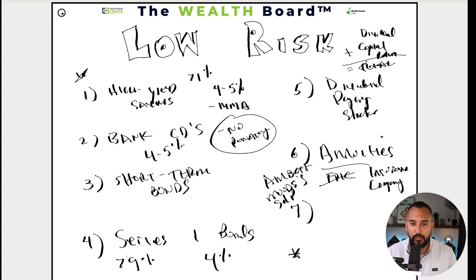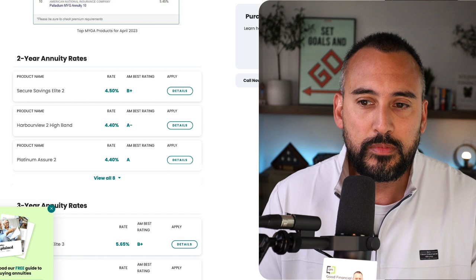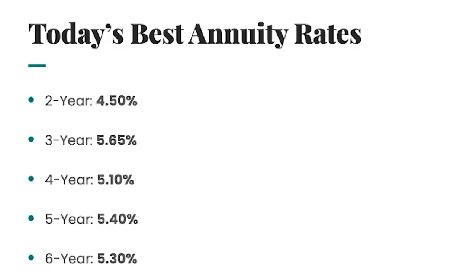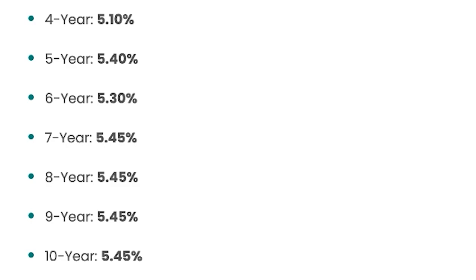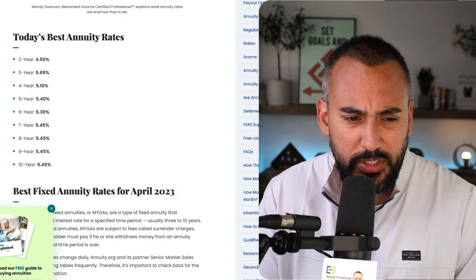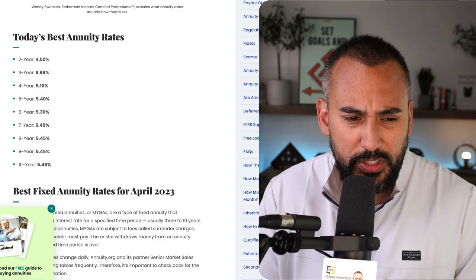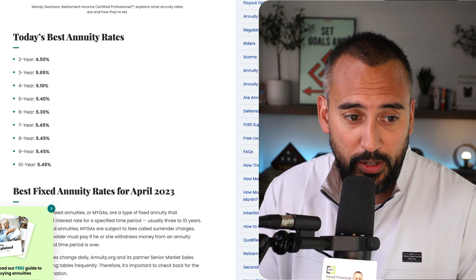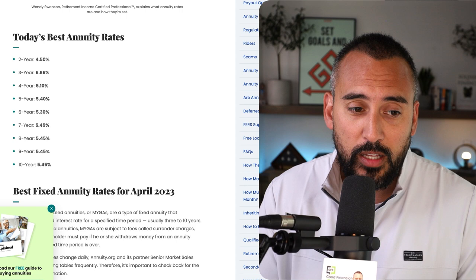So what are annuities paying right now? So for the purpose of this video, we're going to look at fixed annuities. And I went to annuity.org to see. So give you an idea. Here are some annuity rates, two year, four and a half percent, three year, 5.65, five year, 5.4. So, all right, looking pretty good. 10 year, 5.45. As you can see, it doesn't really make sense to lock up your money any longer than three years, unless you just are worried that interest rates are going to go down and you just want to lock in that period.